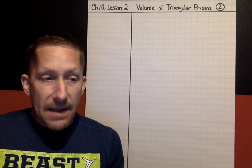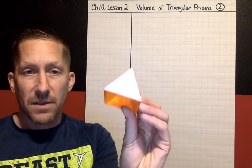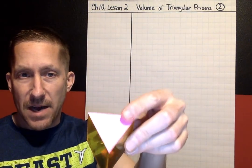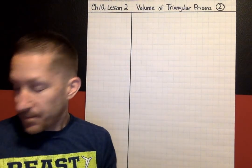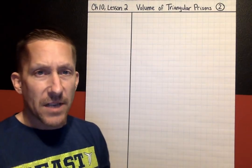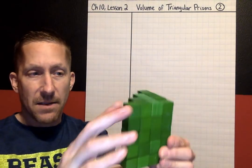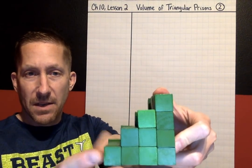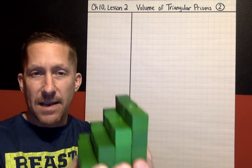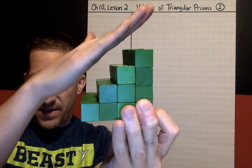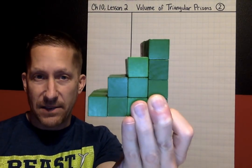Today for a triangular prism, I've got a couple models for you. This is a triangular prism — the top and the bottom bases are identical and parallel, and they are triangles. I also have a triangular prism made out of cubes. Now you have to imagine that these — I know that's not a perfect triangle right here — but imagine if this were a straight line, that would make a triangle.